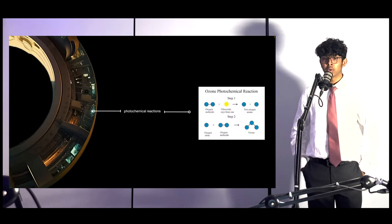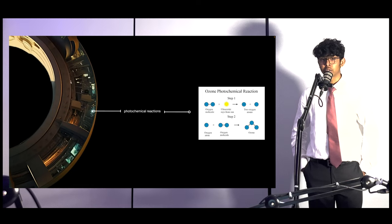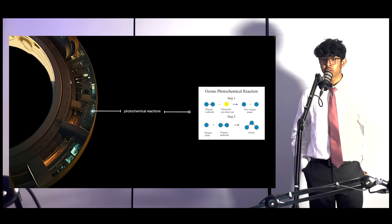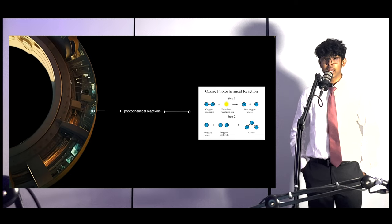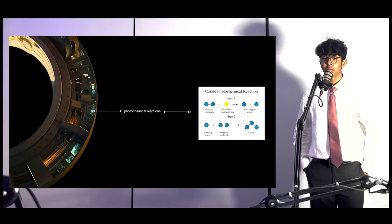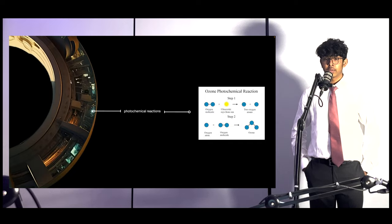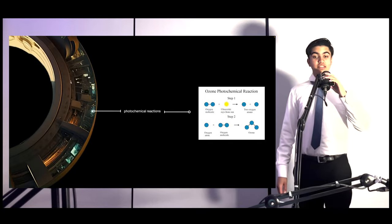Ozone forms through a natural cycle of photochemical reactions involving UV radiation and oxygen molecules. The process takes about 10 to 15 days, and in our design, we've included a 10 kilometer thick layer for optimal protection.